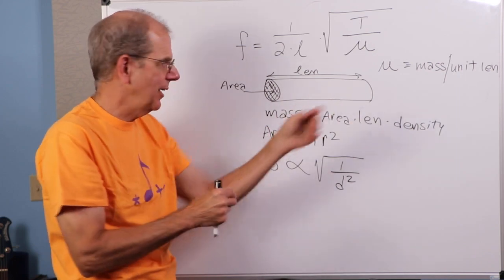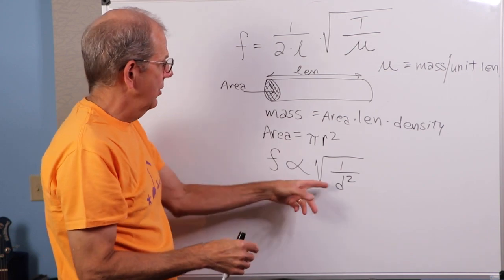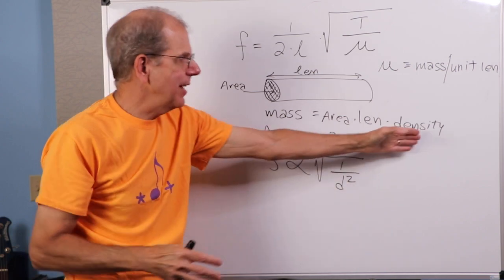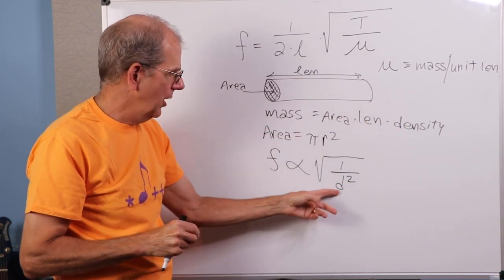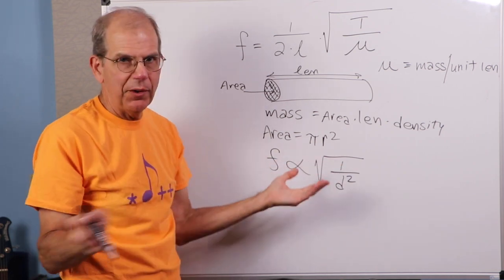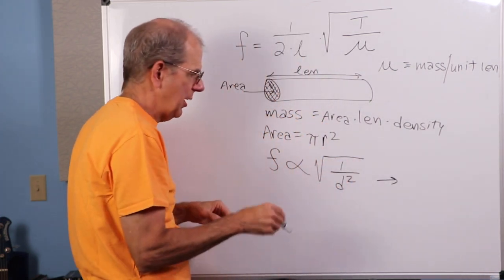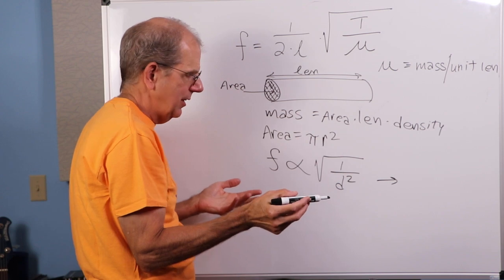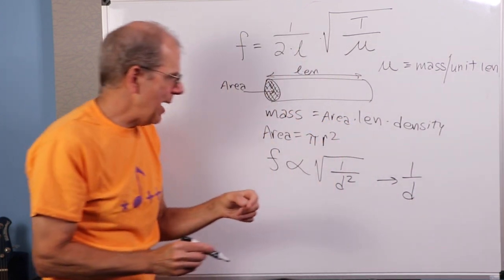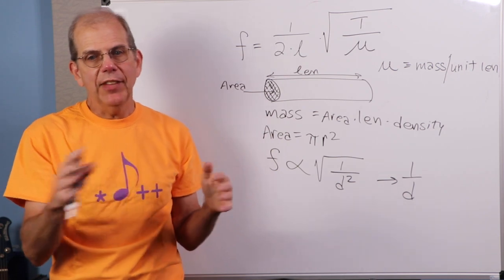So, when you substitute this in, the area is pi r squared. I have density, but that's consistent for all my strings. I'm not going to have my strings made out of vastly different materials. We can factor that out as a constant. When you put that all together, you find out that the frequency is proportional to the square root of one over the diameter. The diameter is just twice the radius squared.